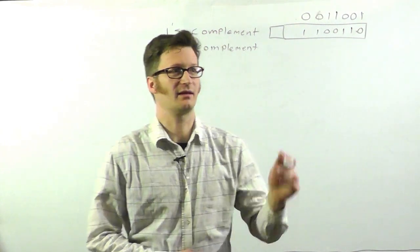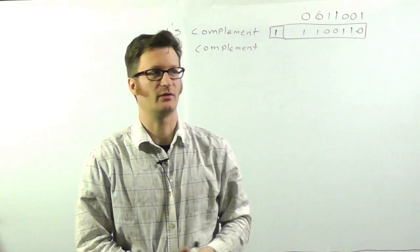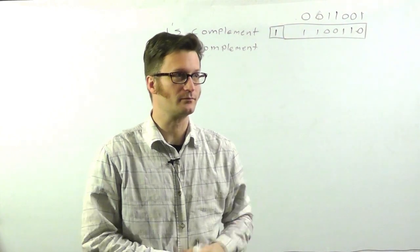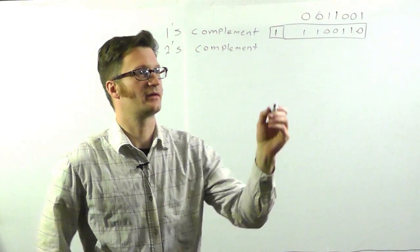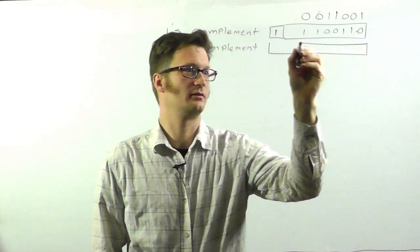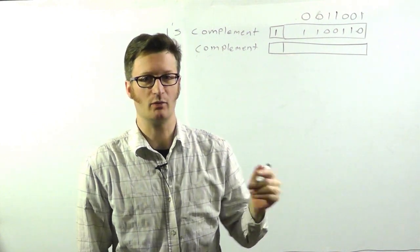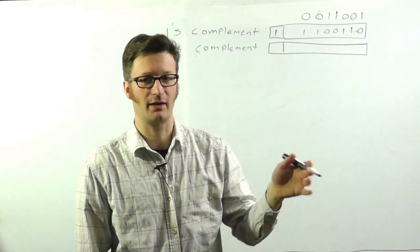And since we're saying that this is a negative number, we need to put this as a 1. If it was a positive number, this would be 0. Now, let's do the 2's complement. 2's complement is very similar to 1's complement, except that we just add 1. We complement it, then add 1.